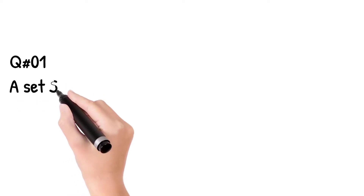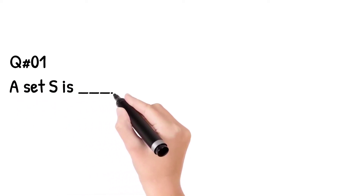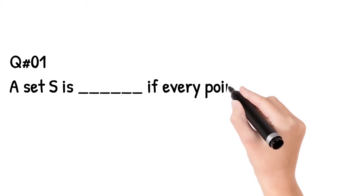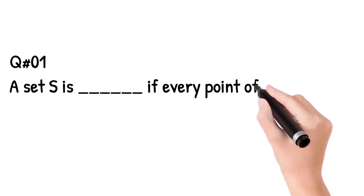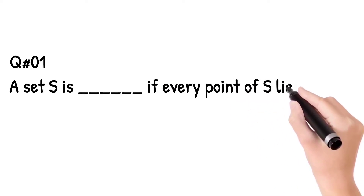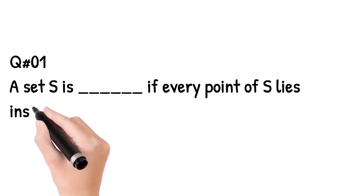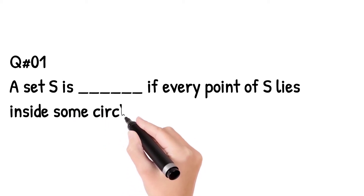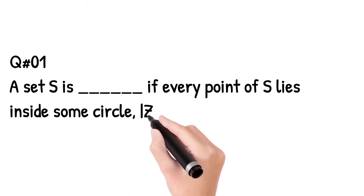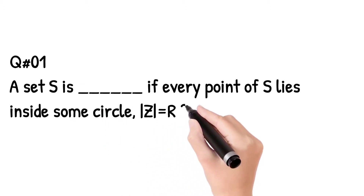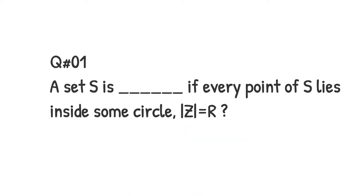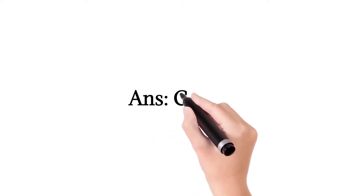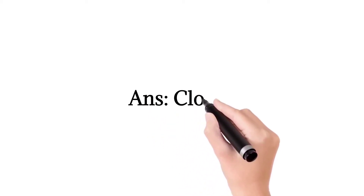Our first question is: a set S is said to be bounded if every point of S lies inside some circle. The answer is closed set.